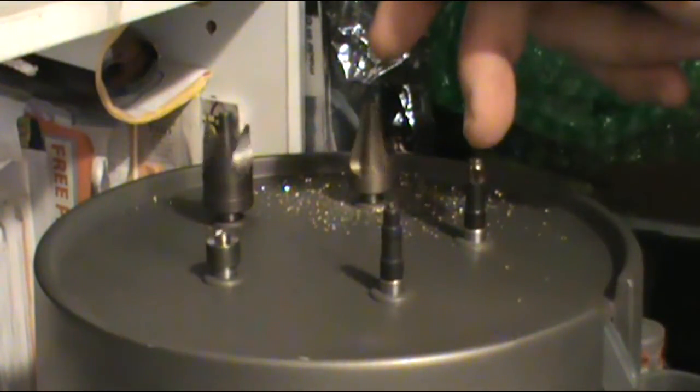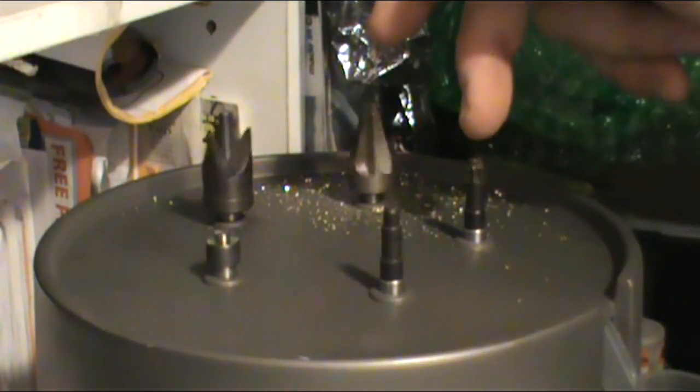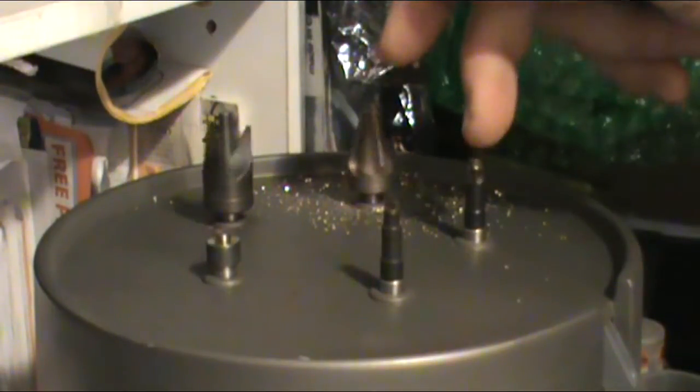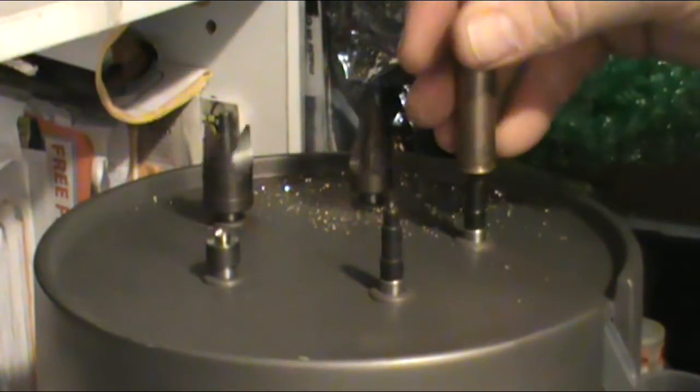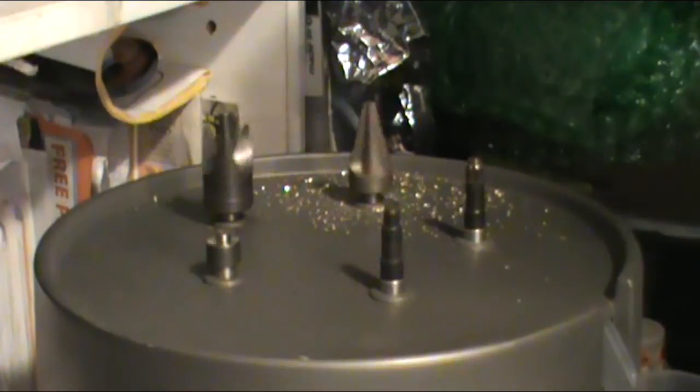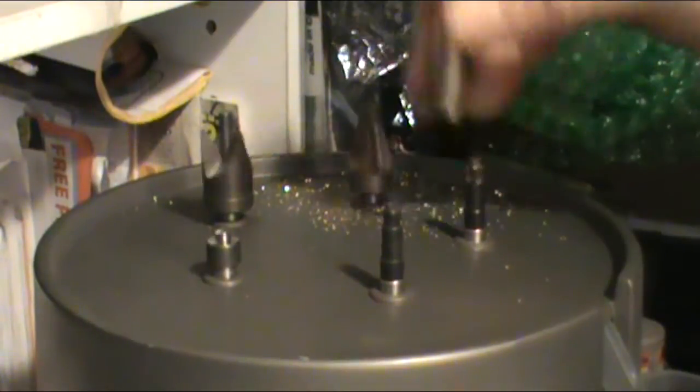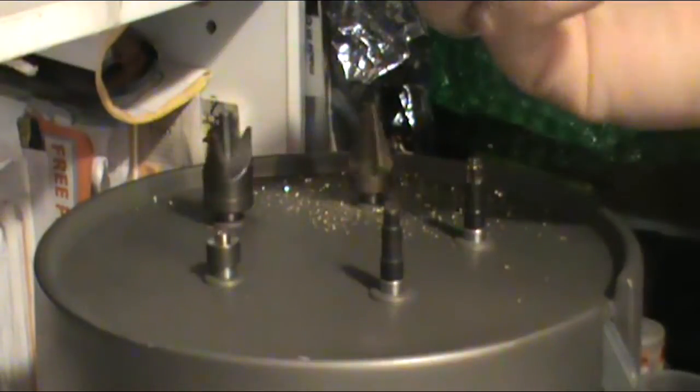This is the carbon cleaner for the primer pocket, pocket uniform bit. If you have some of the military brass that's got four dimples in it instead of just being crimped all the way around, this here gets real jerky trying to get that out.